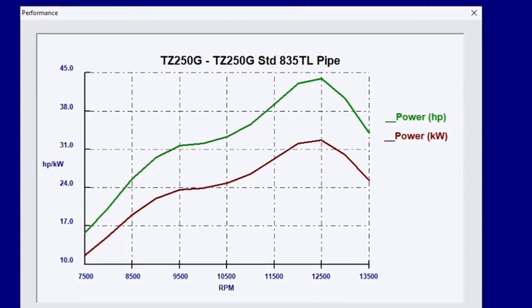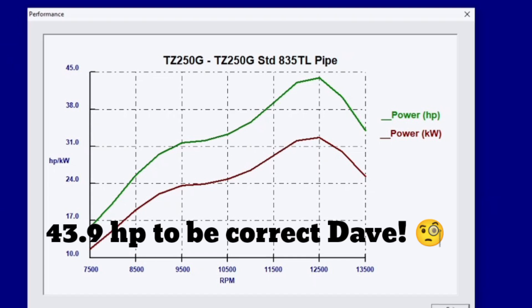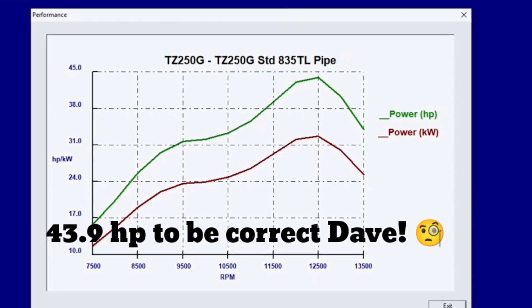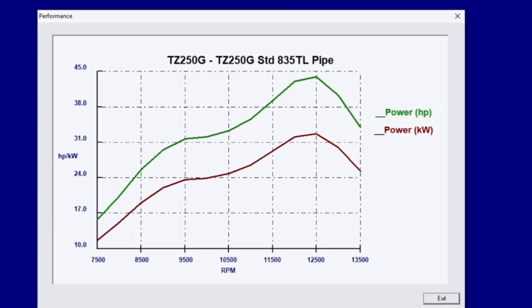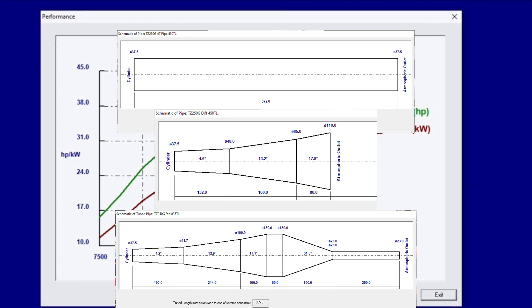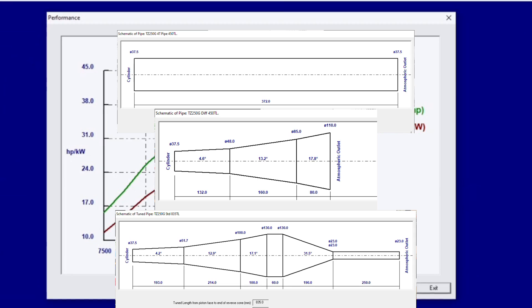So for the sim I used the file it came of EngMod 2T for a TZ250. It's putting out just under 45 horsepower. This is for one cylinder. Now we'll have a look at the different, the three different pipes and how the different shapes of the pipes affect the pressure waves within that.